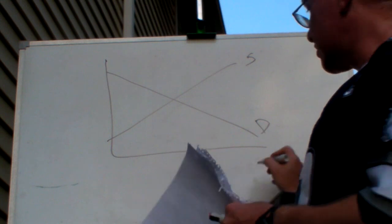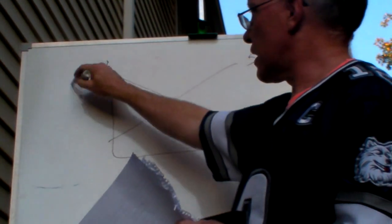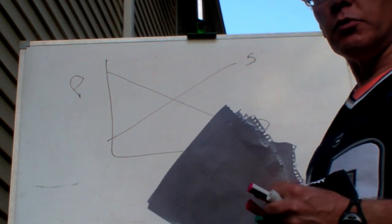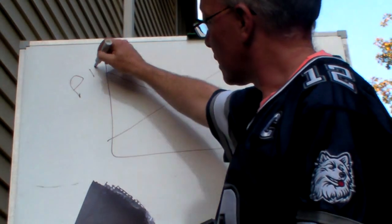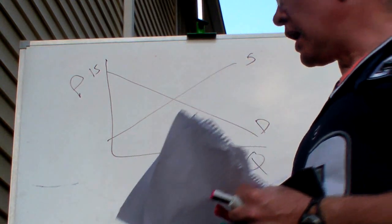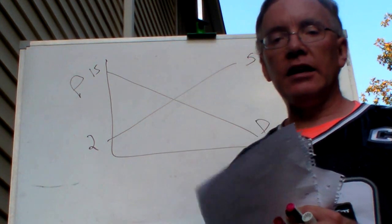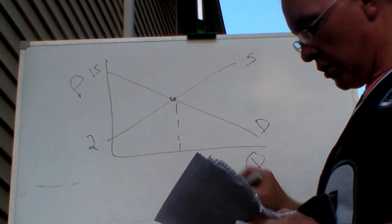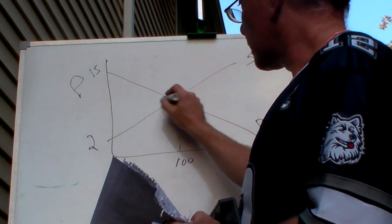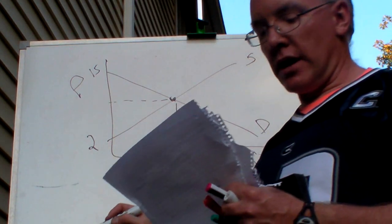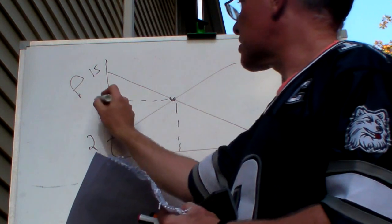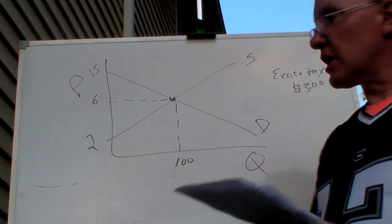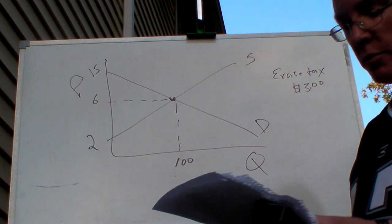We have a supply curve and a demand curve along the quantity-price axis. Let's assume that if the price was $15, no one would want to buy it, and if the price was $2, no one would want to sell it. The equilibrium quantity ends up at 100 and the equilibrium price ends up at $6. Before we think about the excise tax, let's just think about what's going on in equilibrium.